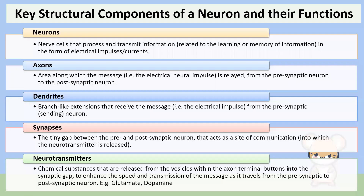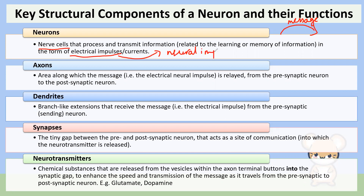These are the definitions you need to know — it doesn't have to be word for word, but there are some important elements in each. Neurons are also known as nerve cells; they're the basic functional unit of the nervous system. When a neuron sends a message to another neuron, 'message' is actually an oversimplification — we call that an electrical impulse or neural impulse. At Year 10 level you can just call it the message, but those are the proper terms. The axon is the part of the neuron that transmits or sends the message.